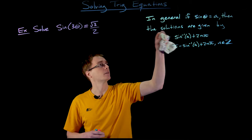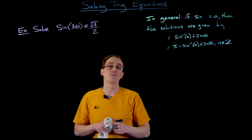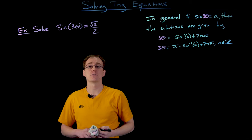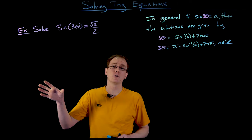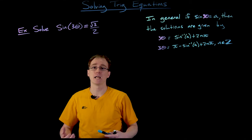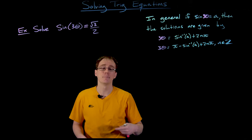Instead of trying to solve sine of theta equals a, we're now trying to solve sine of 3 theta equals a. So if we replace theta in our original setup with 3 theta everywhere, that will allow us to find our solution set. Our old input was theta; our new input is 3 theta. If we make that substitution everywhere, it works out in exactly the same way — our solutions will look very different, but the procedure is really just the same.